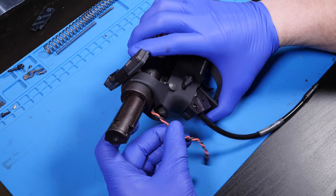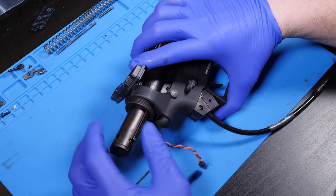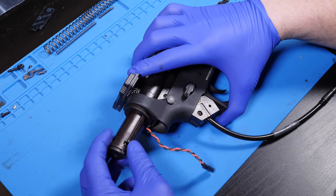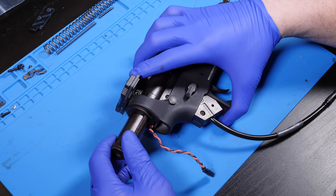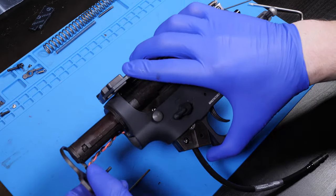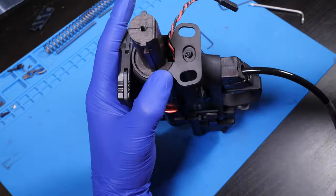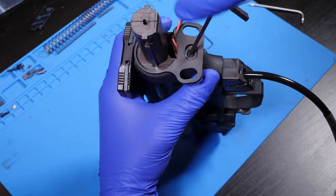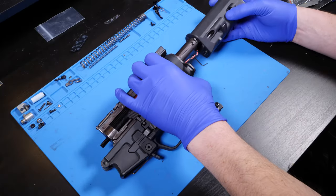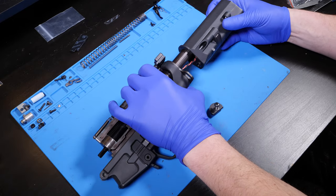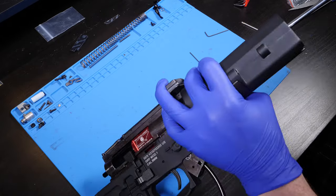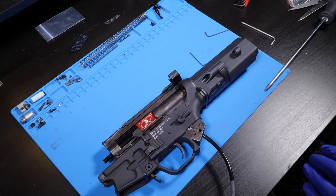Next to reattach the buffer tube, screw in the base, being careful not to snag any wires. There's a channel in the bottom that's going to allow the wires to run through. On top of that slides the sling plate, fastened on with the original screw. The buffer tube itself then slides over all of that and is secured on with the screw at the base of the tube.